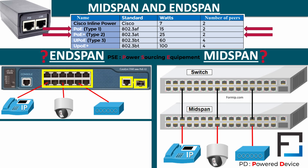The second PoE standard, 802.3at, dates back to 2009 and is called PoE+. It can provide up to 25.5 W and requires a minimum Category 5 UTP cable. Type 2 is therefore useful for devices that require more power, such as motorized IP cameras with PTZ (pan-tilt-zoom) function, wireless access points with more than three radios, LCD monitors, or tablets.